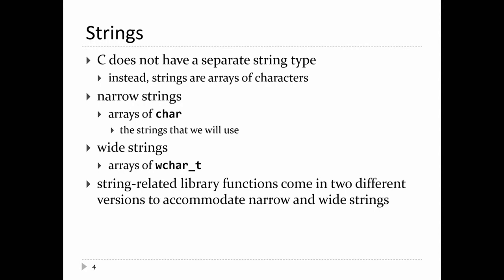C also doesn't have a separate string type, which is really weird if you come from Python or Java — it's just arrays of characters. If you're programming an internationalized program, you'll be using arrays of wchar_t. If you're going to be using strings a lot in your program, you're going to use a library of some kind to manipulate them. Your string functions will have different versions to handle the different types of character encodings. The standard library has functions corresponding to strings of char and strings of wchar_t, but we're only interested in the ones that operate on strings of char.